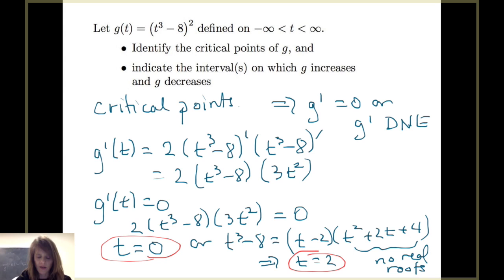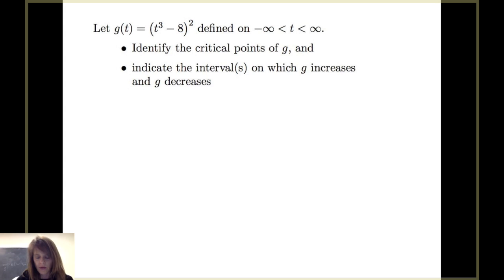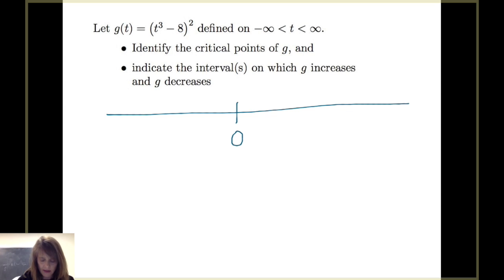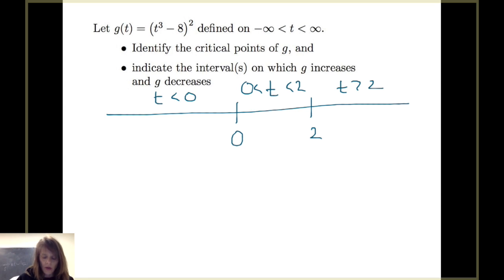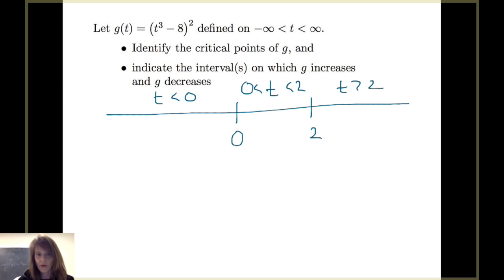Next, we indicate the intervals on which g increases and decreases. We take our domain, negative infinity to infinity, and let the critical points subdivide it. This gives three intervals: t less than 0, t between 0 and 2, and t greater than 2. It's sufficient to check one point in each interval and evaluate the derivative there to determine where g is increasing or decreasing.